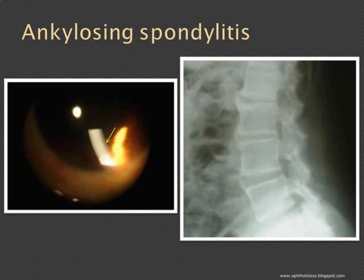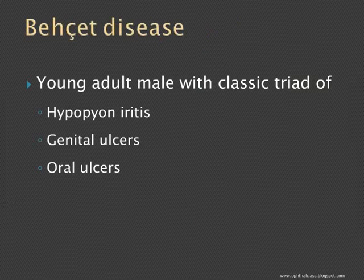Behçet's disease is a classical condition presenting as hypopyon uveitis, associated with genital ulcers and oral ulcers — these three form the classic triad — and it can also have various other associated features. Those were the few differential diagnoses for anterior uveitis in a young adult.